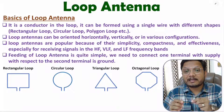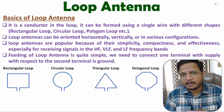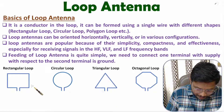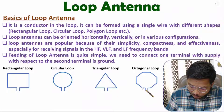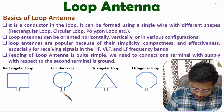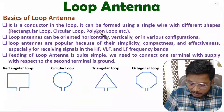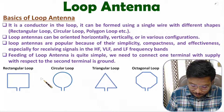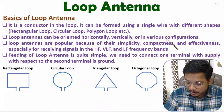A loop antenna is a conductor in a loop. If you have a single wire and form a loop, that will simply be a loop antenna. You can observe here — we have a rectangular loop, a circular loop, a triangular loop, and an octagonal loop. So we have a single wire formed in different shapes of loops.